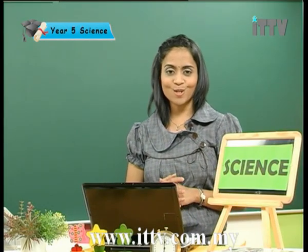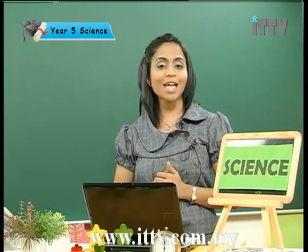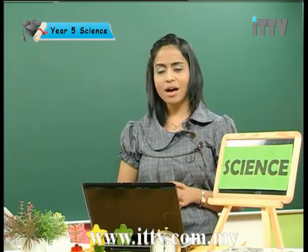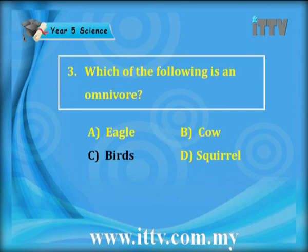Question 3: which of the following is an omnivore? Omnivores are animals that eat both animals and plants. The answer options are: A eagle, B cow, C birds, D squirrel. The answer is C birds. Eagle is wrong because eagles are actually carnivores, and cows and squirrels are examples of herbivores.